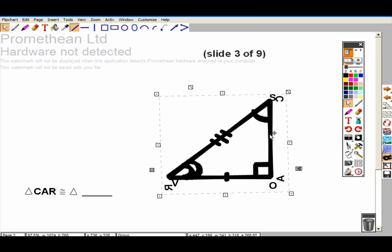Then to write a correspondence statement, I name the angles that go together as a pair. As you can see, Triangle Car matches with Triangle SOV, since angles C and S go together as a pair, A and O go together as a pair, and then R and V go together as a pair.